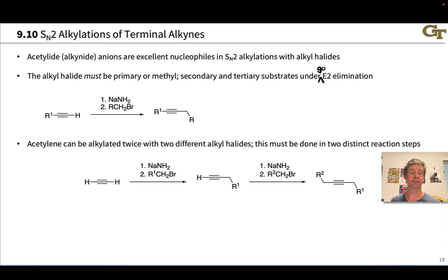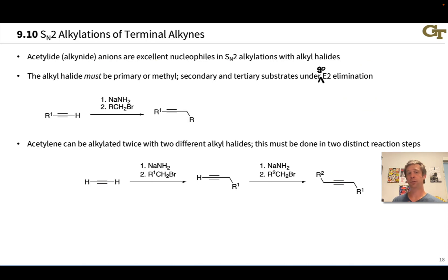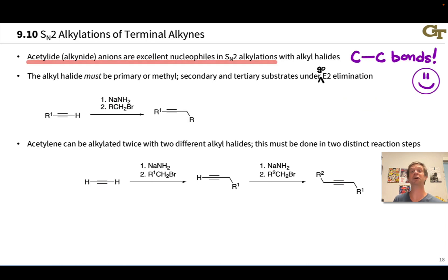Terminal alkynes are essentially the most acidic hydrocarbon C-H bonds in organic chemistry because of the stability of a lone pair in an SP hybrid orbital. We can readily generate these acetylide anions, the conjugate bases of terminal alkynes. These are excellent nucleophiles in SN2 alkylations because they contain a negatively charged carbon atom, and we can react these with alkyl halides to form new carbon-carbon bonds.